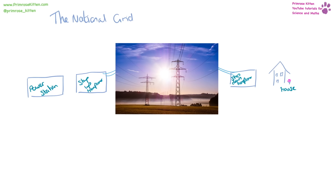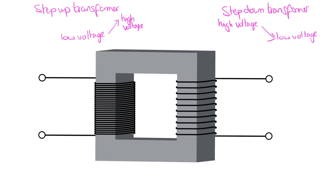The national grid is how we get electricity from power stations to our houses. The power stations generate the electricity and move it to a step-up transformer, then through a network of cables and pylons across the country to a step-down transformer, and then into our houses. A step-up transformer turns a low voltage into a high voltage so electricity can move through the system with less energy loss, making it more efficient. A step-down transformer takes it from high voltage to a low voltage so it's safe to be in our homes.